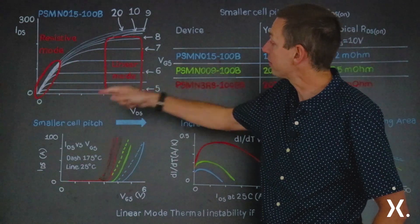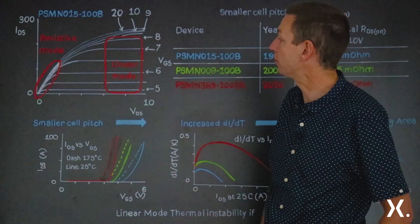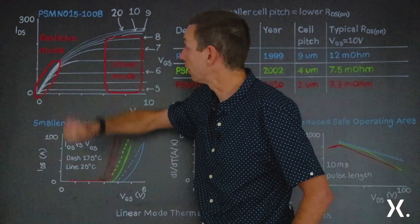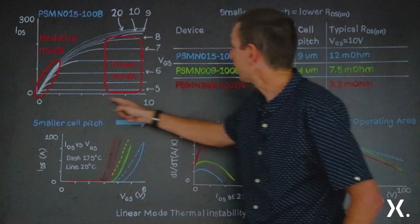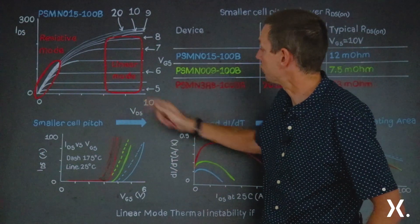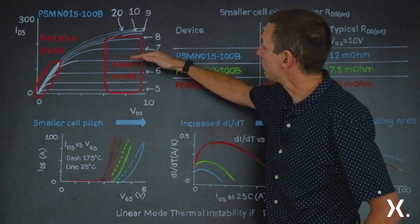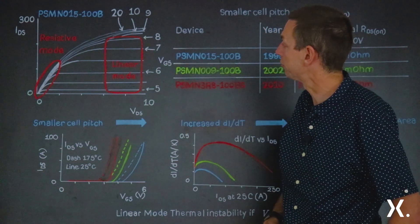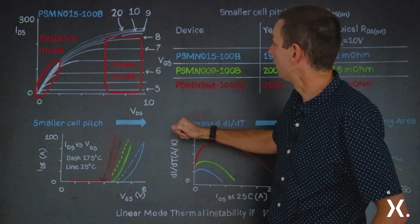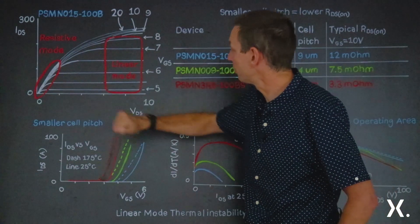So what do we see? This is the current coming out of the MOSFET for different source-drain voltages and different gate biases. On the Y axis we've got the source-drain current. On the X axis we've got the source-drain voltage across the MOSFET going out to 10 volts. We see a whole series of lines plotted on the graph — these are where different gate biases are applied to the MOSFET. At 5 volts, we get a small amount of current.